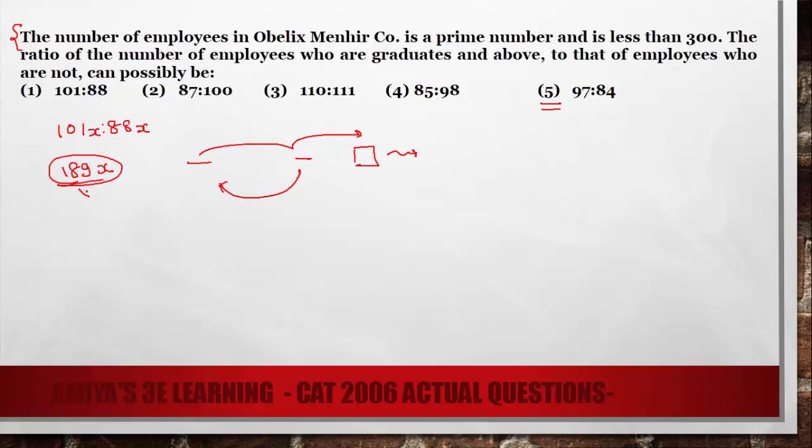And we know 189 is not a prime number, so this number cannot be prime. Here, the summation is 187 and the number of employees should be in the form of 187x. This is 221x, this one is 183x, and this one is 181x. This one is not prime, this one is not prime, this one is not prime. And this is the only single option where our summation 181x is a prime number where x equals 1.